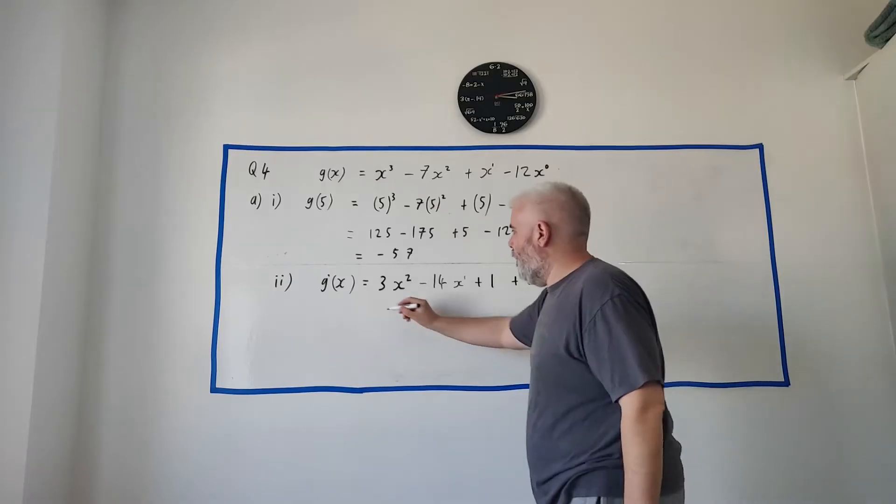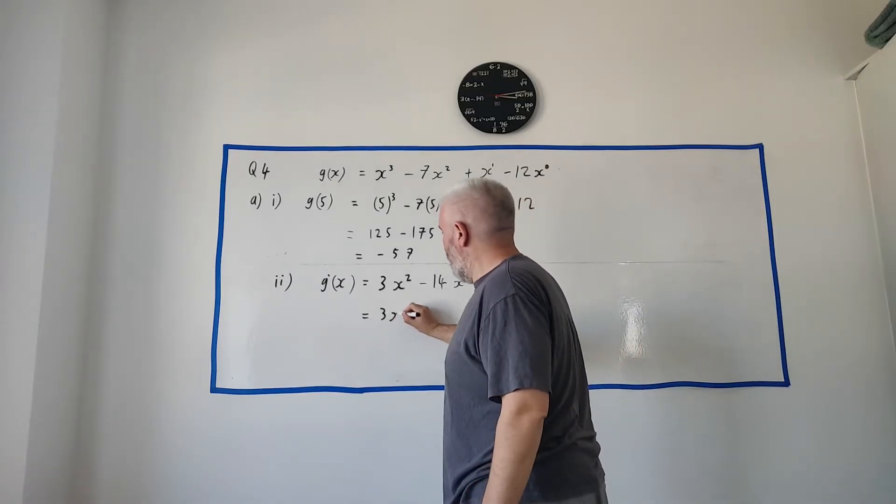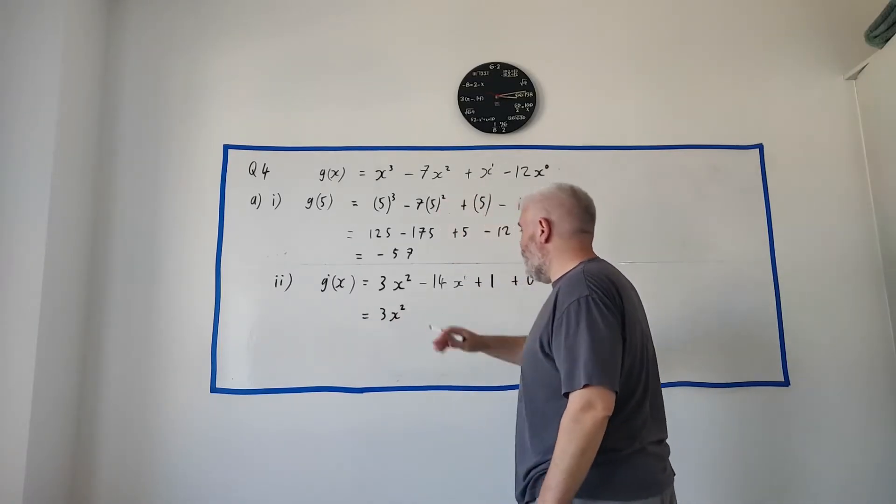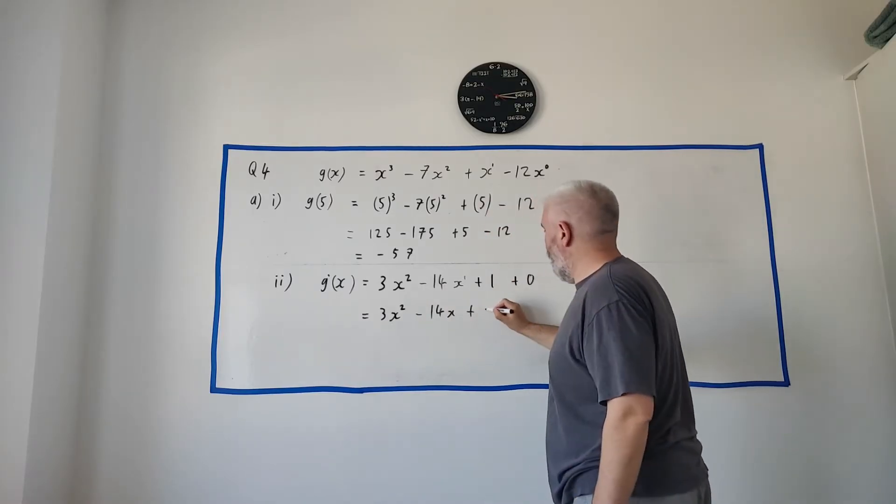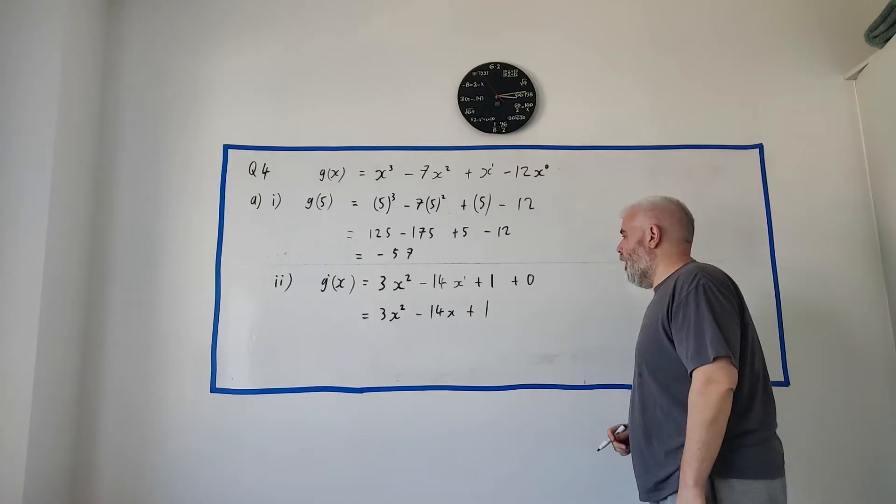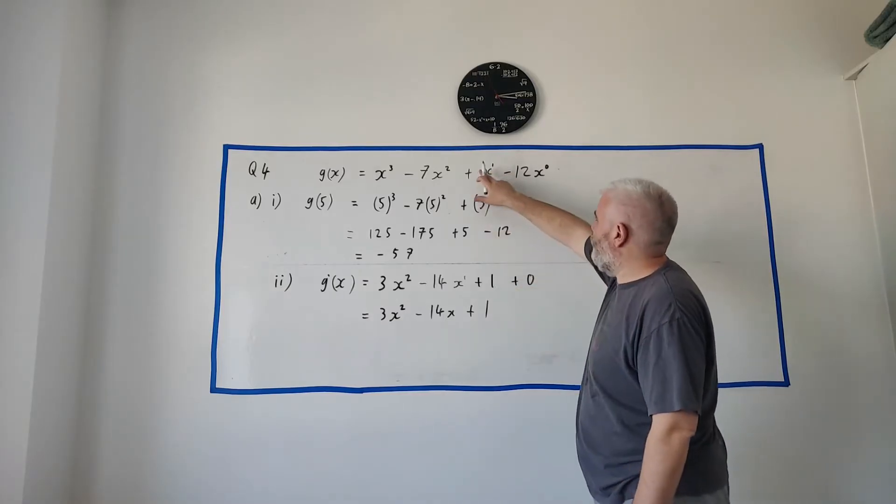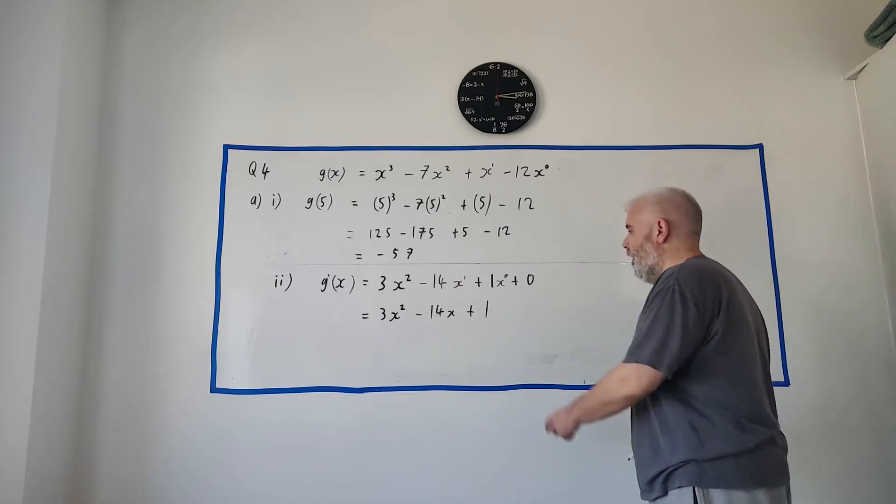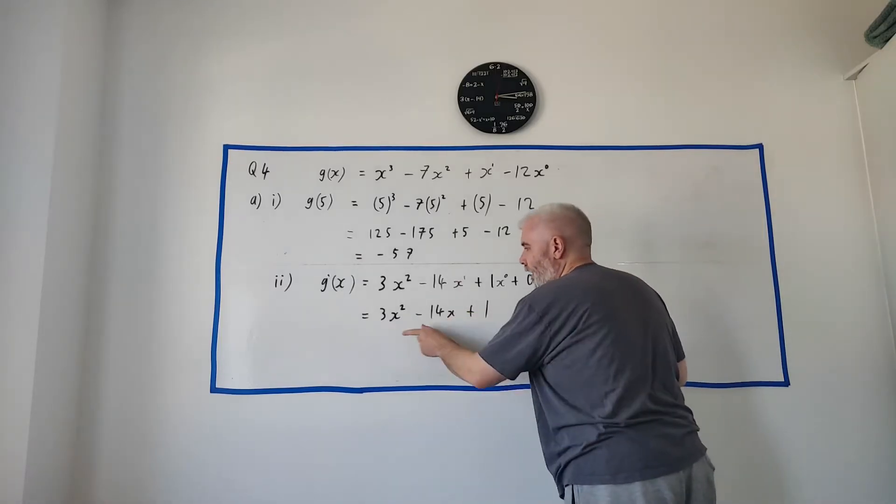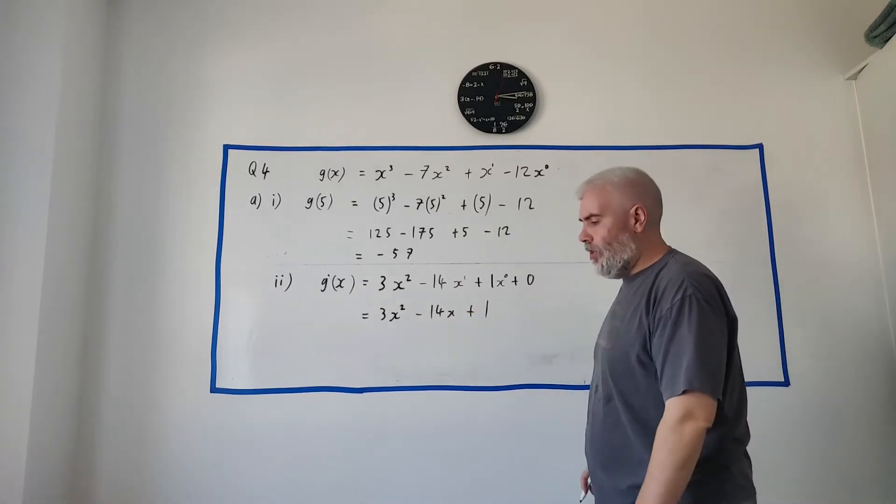You'd get full marks for that. But I'll just clean it up. 3x squared minus 14x plus 1. Oh, well, I never fully settled this. 1 multiplied by 1. x to the power of 0. Well, let's put it in. x to the power of 0. Anyway, that's your full answer here at the end. So, that's A part 2.